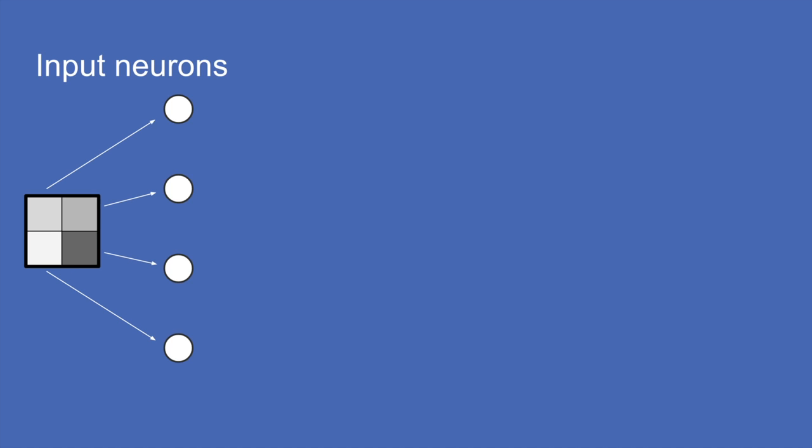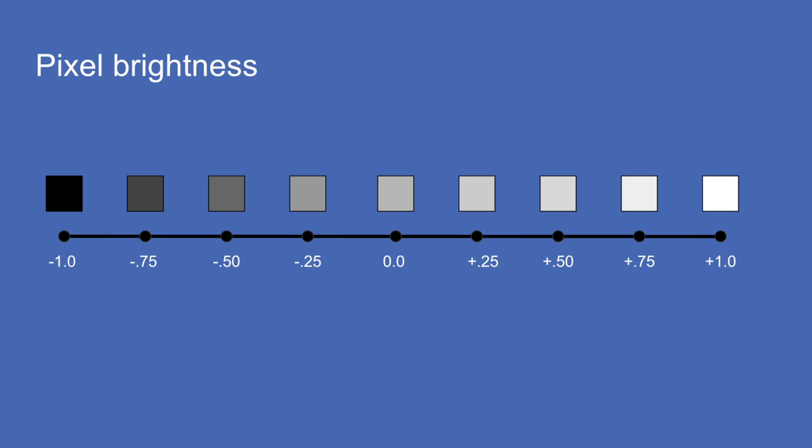In this case our four pixels — you break them out into input neurons and assign a number to each depending on the brightness or darkness of the pixel. Plus one is all the way white, minus one is all the way black, and gray is zero, right in the middle.